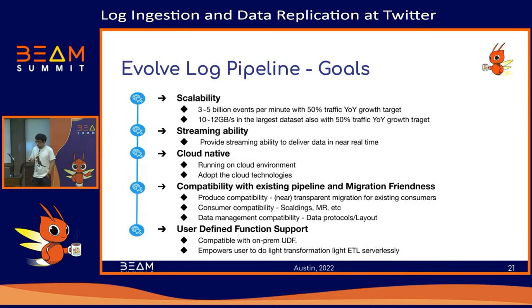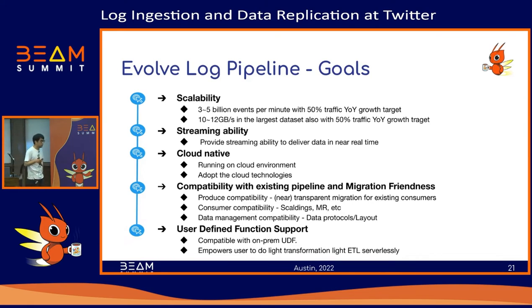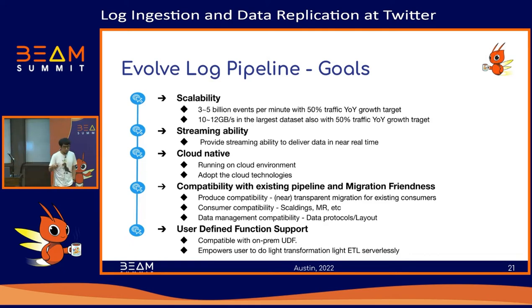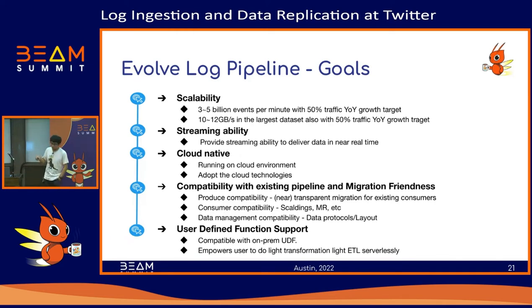Here are our goals for the new pipeline. First, it must handle our current scale and a goal of 50% year-over-year growth — if it's 5 million events at peak this year, it should handle more than 10 million after two years. Second, we want to provide streaming capability; instead of hours to deliver data, we want seconds to minutes.